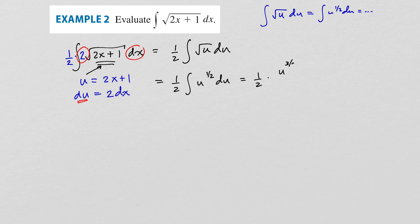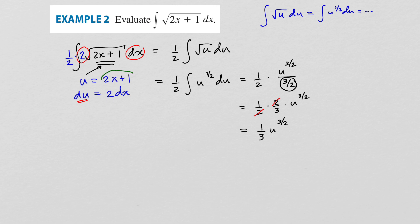We now have one-half integral of u to the one-half du. The power rule gives u to the one-half plus one, which is three-halves, divided by three-halves. This equals one-half multiplied by two-thirds times u to the three-halves, and the twos cancel, giving one-third u to the three-halves. Substituting back: one-third times 2x plus one to the three-halves plus c.